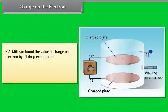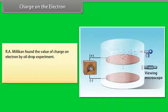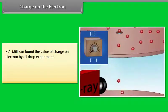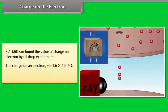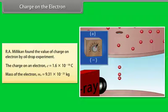Charge on the electron: R.A. Millikan found the value of charge on the electron by the oil drop experiment. Oil droplets enter the apparatus through a small hole and fall between two charged plates, observed with a microscope. The space between the plates is irradiated with X-rays, which ionize air molecules, and electrons may be absorbed by an oil droplet. The charge on an electron is 1.6 × 10⁻¹⁹ coulombs, and the mass of the electron is 9.31 × 10⁻³¹ kilograms.